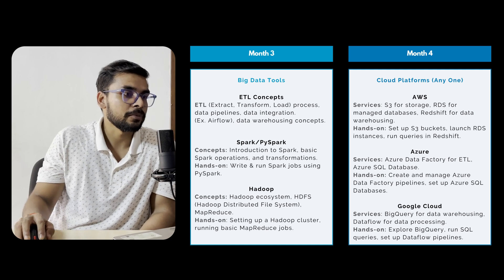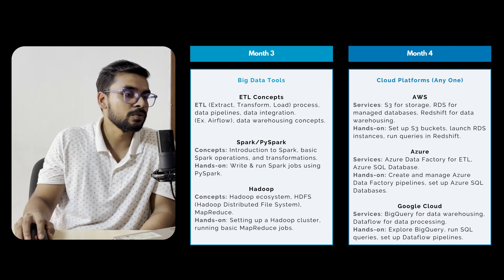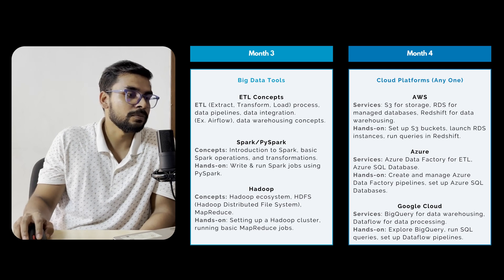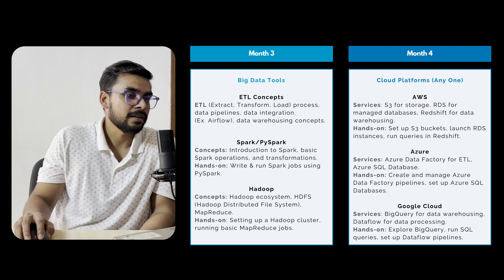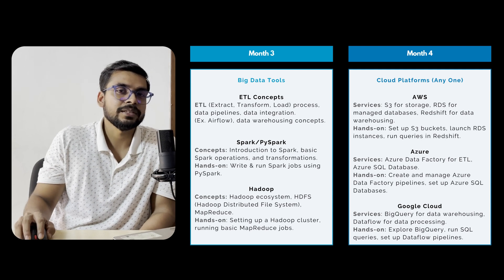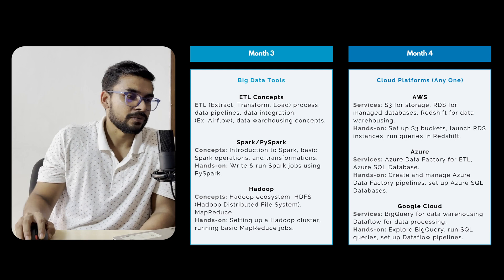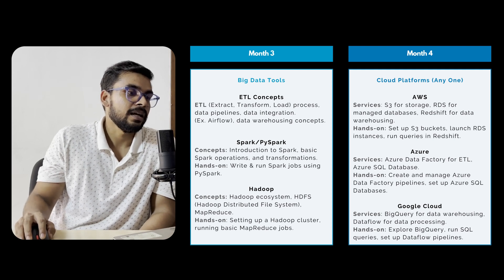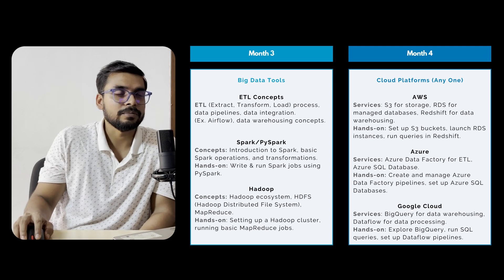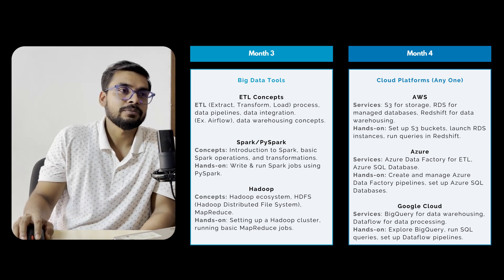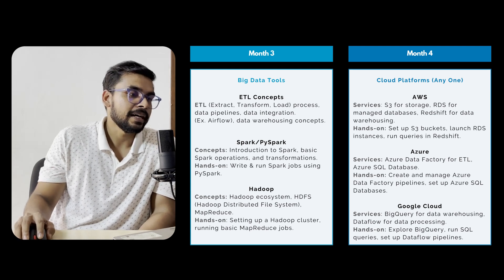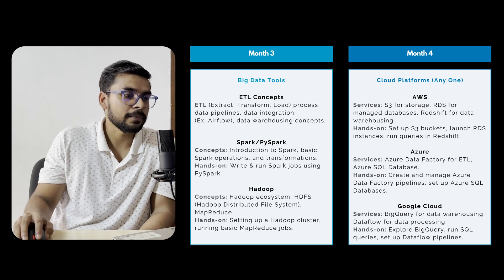The third month is the most important month, where you learn big data tools used specifically in data engineering. Learn about ETL — which stands for Extract, Transform, and Load — data pipelines, and data integration. For the ETL process, you can use Apache Airflow, one of the most widely used open-source platforms for scheduling jobs and ETL processes. Also cover data warehousing concepts, since all your data will be stored somewhere. After this, move on to Spark and PySpark.